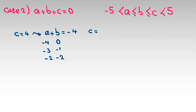Let's consider when c equals 3. Then a plus b equals negative 3. With a equals negative 4, b equals 1; with a equals negative 3, b equals 0; with a equals negative 2, b equals negative 1; and with a equals negative 1, b equals negative 2. So we have three cases here too.